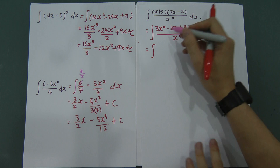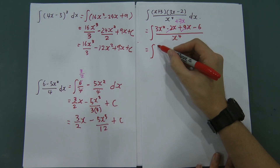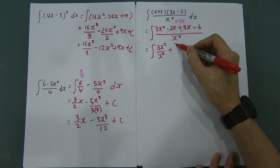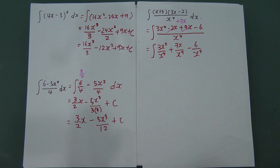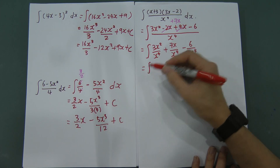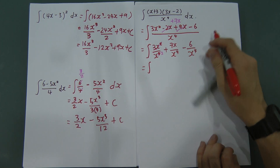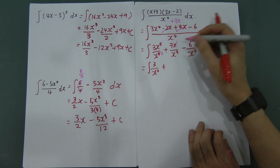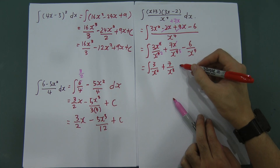After expanding and simplifying, split up: 3x²/x⁴ plus 7x/x⁴ minus 6/x⁴. Then simplify the x powers: 3x²/x⁴ gives 3/x², 7x/x⁴ gives 7/x³, and 6/x⁴ stays. This gives 3/x² plus 7/x³ minus 6/x⁴.